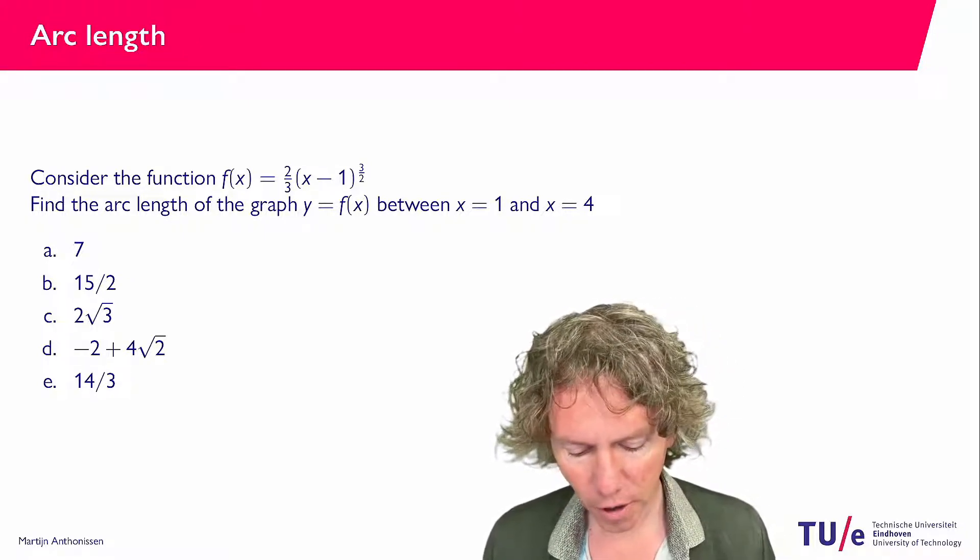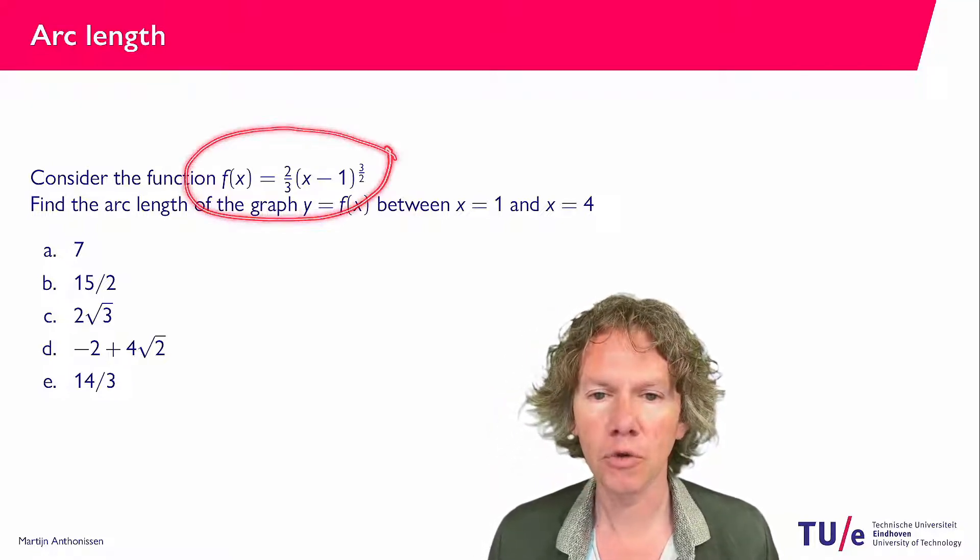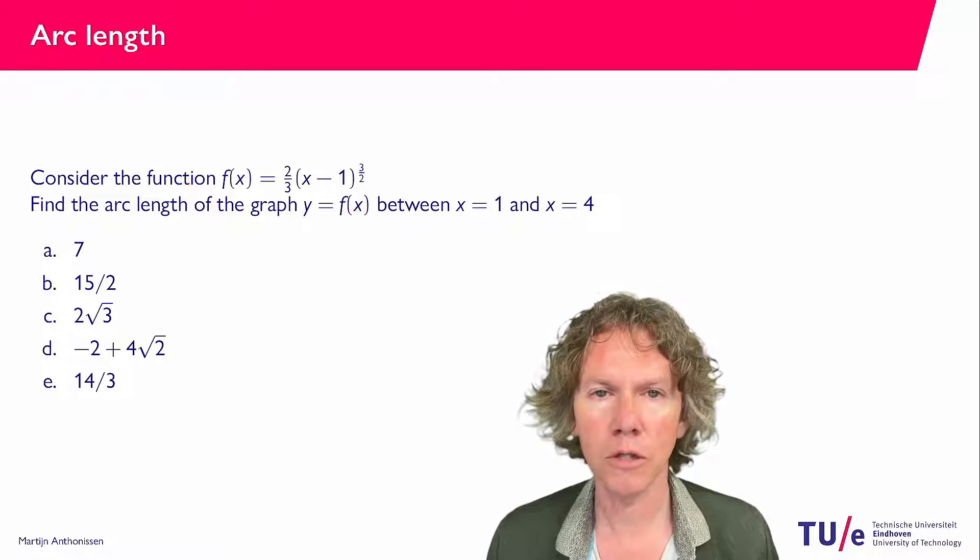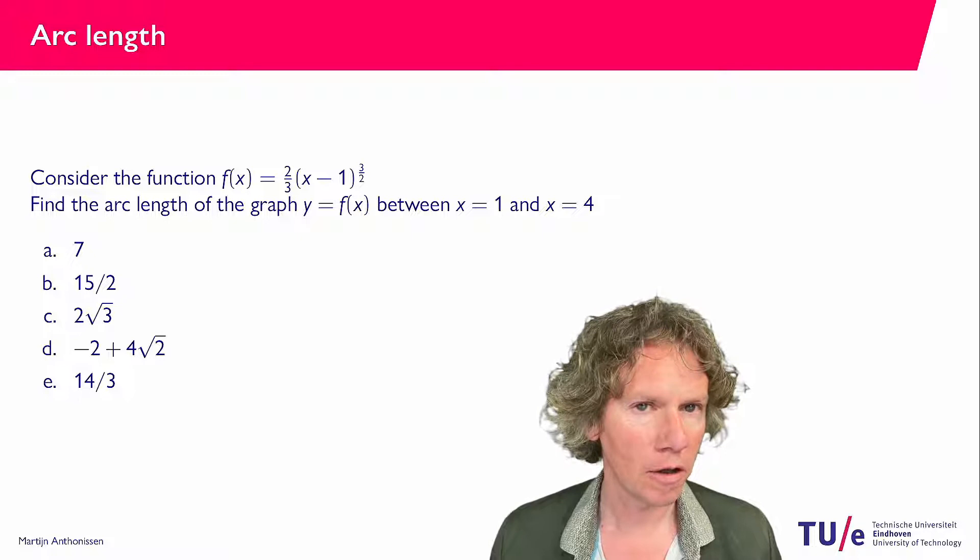So what we have is a function of one variable, f of x is two-thirds times x minus 1 to the power 3 over 2, and then we're being asked to compute the arc length.